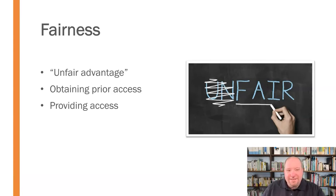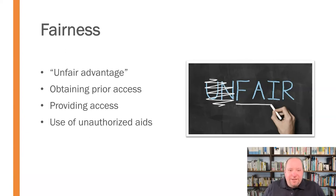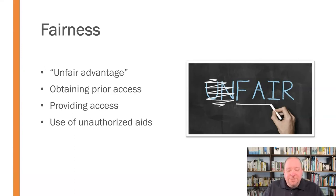Likewise, if you're providing access to something, that's an issue. If you had a test that morning and you let someone watch while you're taking an online exam so they know what's going to be on it, you're providing access — that's a violation of fairness, giving that person an unfair advantage. And then the use of unauthorized aids: if you're using something you're not allowed to, that violates fairness and gives you an unfair advantage over other students. We need to be cautious of these things and ensure we're creating and sustaining a level playing field for everyone.